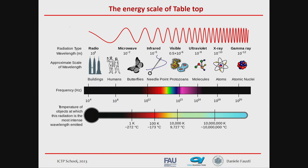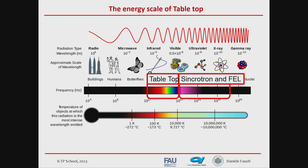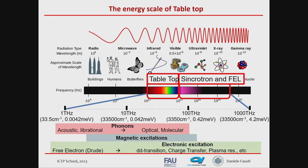The frequency range of interest is accessible with tabletop laser sources in the visible, near, and far infrared. To go to higher energy, we need large-scale facilities such as synchrotrons and free-electron lasers. That allows us to study the dominant degrees of freedom in matter: how vibrations, magnetic excitations, and electronic excitations determine the physical properties of a system.